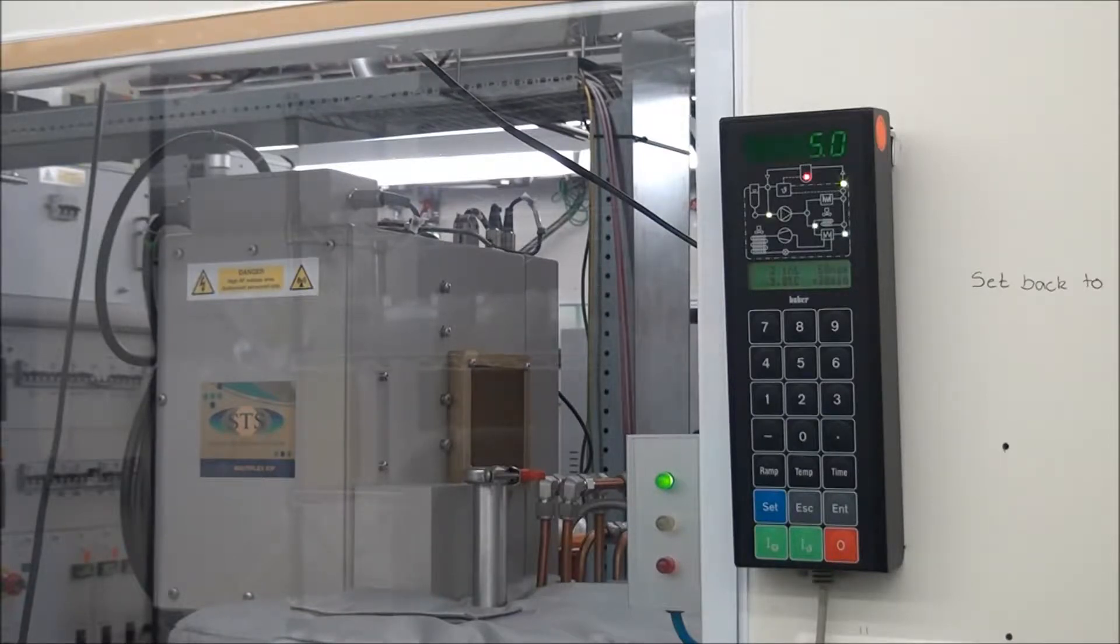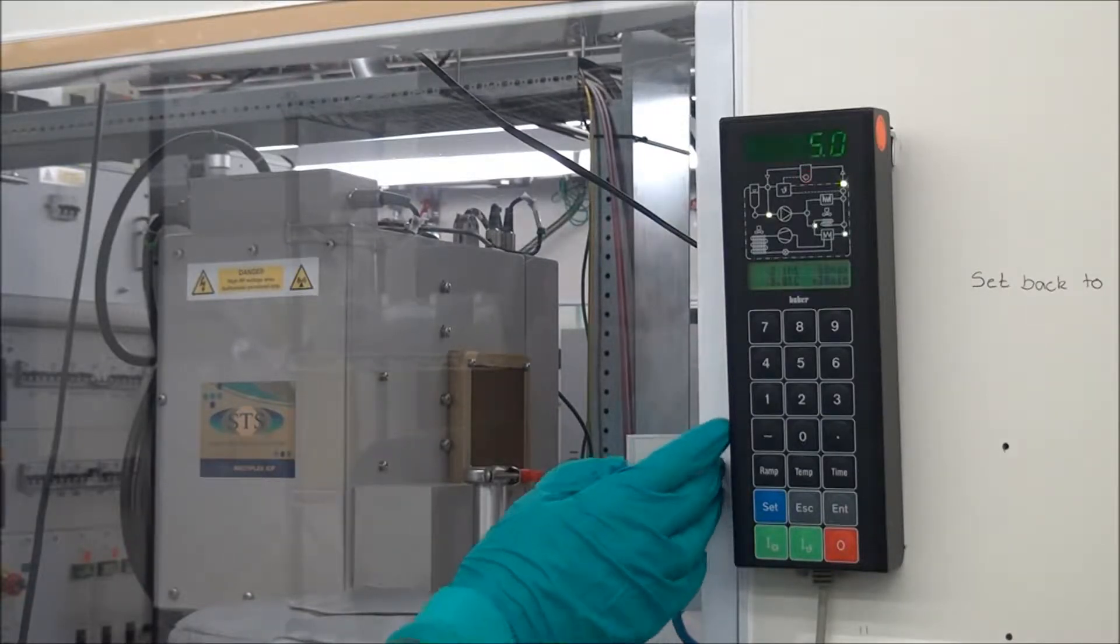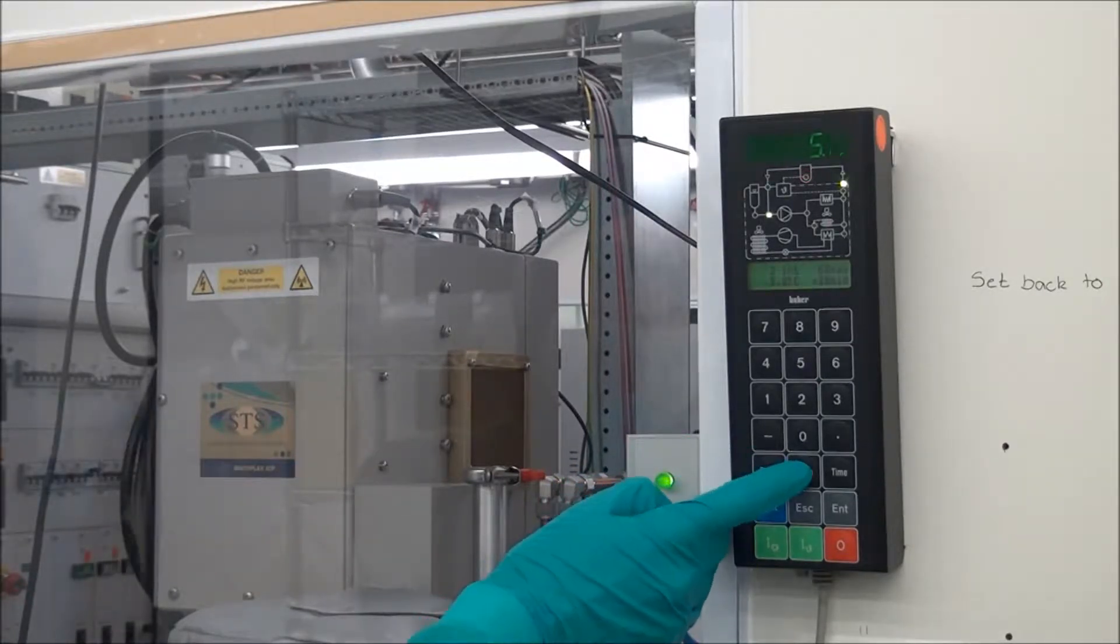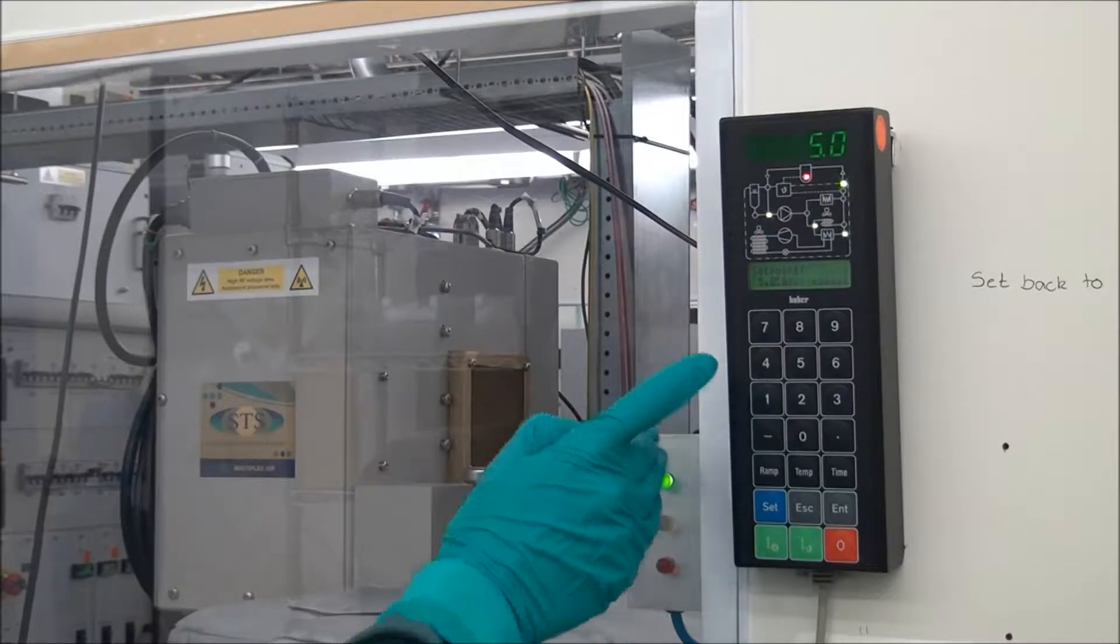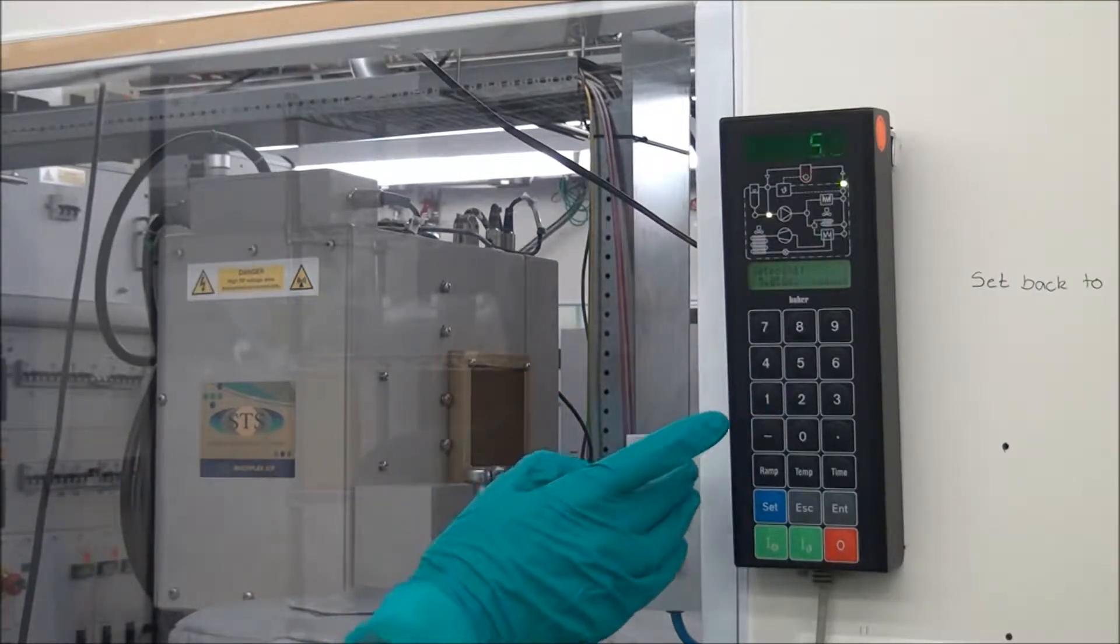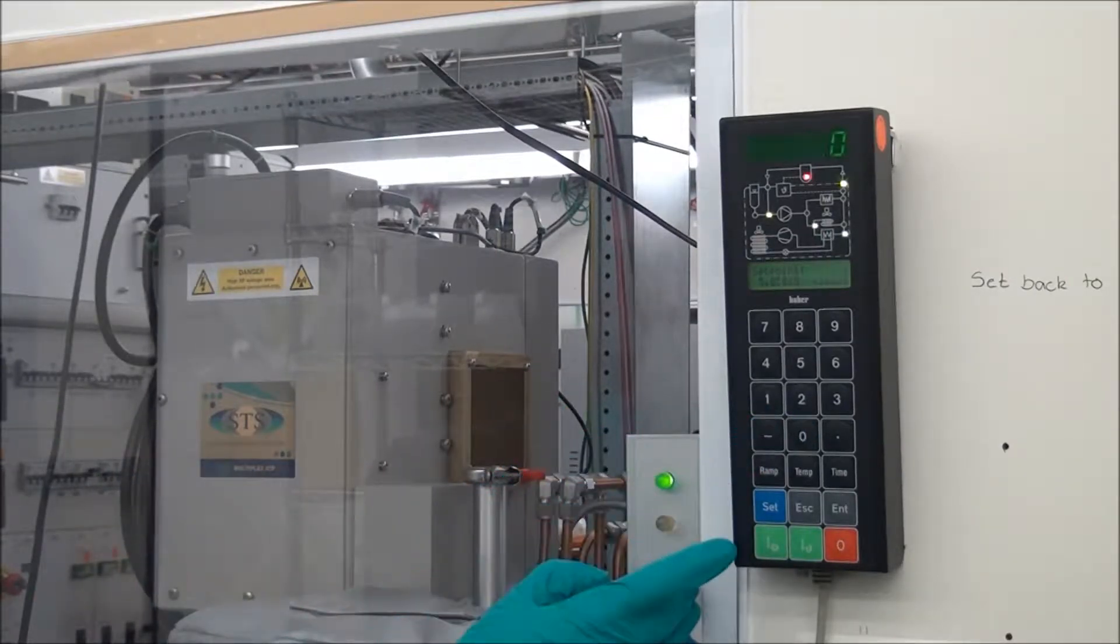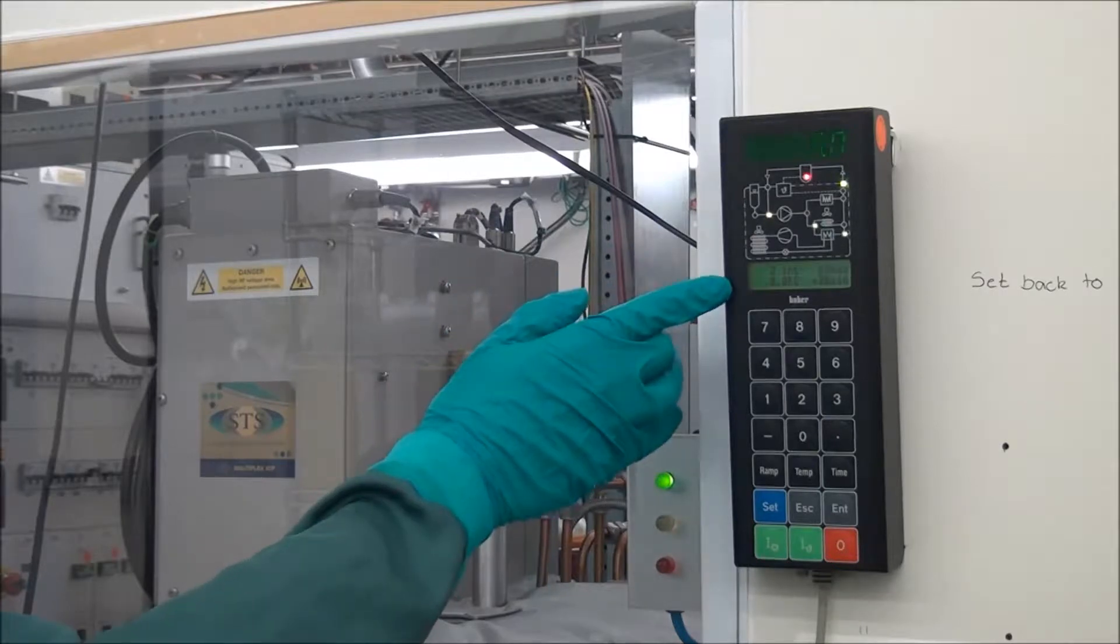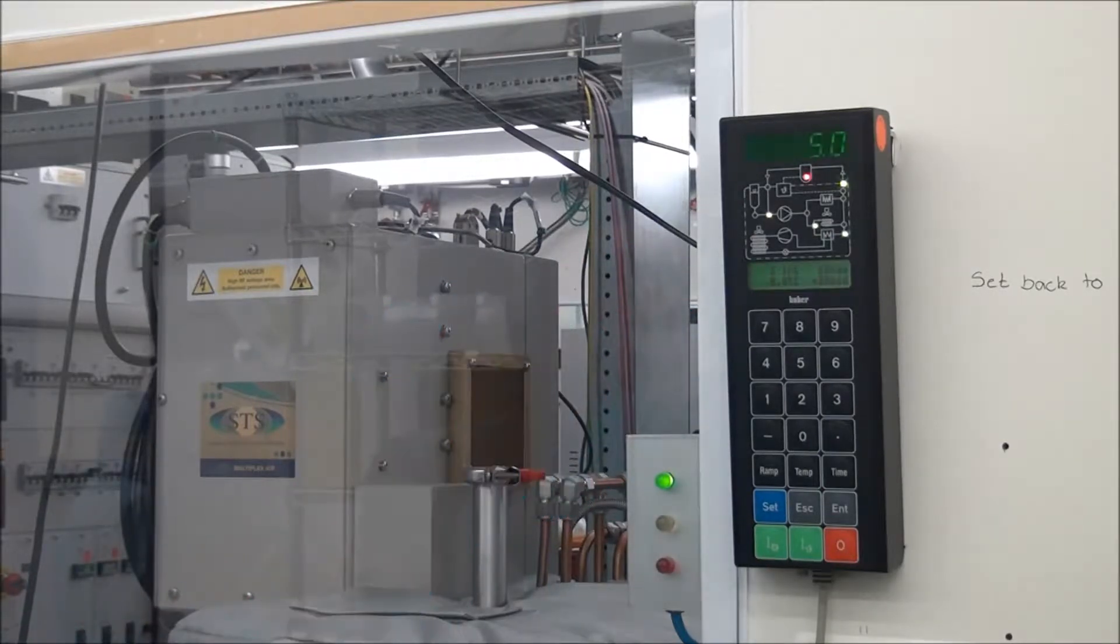To change the setpoint you go to the controller, you press temp. Now I want to process at 0 degrees so I press 0 to change the setpoint and enter ENT. This changes the setpoint and the chiller circuit will start to stabilize.